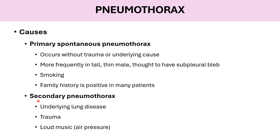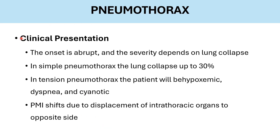Clinical presentation of pneumothorax: onset is sudden and abrupt; severity depends on the percentage of lung collapse. In simple pneumothorax, the lung collapses up to 30%. In tension pneumothorax, collapse is greater — the key point is that the child will become hypoxemic. There is no tension pneumothorax with normal oxygen saturation. The point of maximum impulse shifts due to displacement of intrathoracic organs to the opposite side.